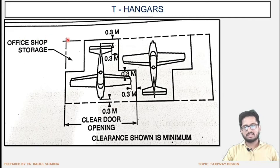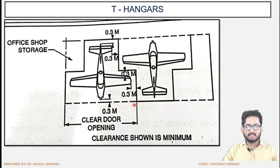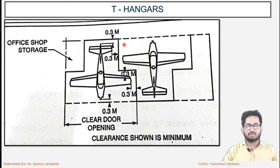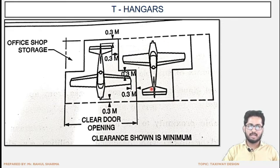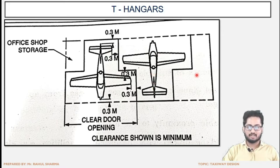The office and shop storage space is kept for handling equipment and various rooms. Clear door openings are provided in hangars through shuttered doors. This is the door opening for a specific area or space of the hangar, and shuttered doors are provided. So the T-hangar is specifically for handling small aircraft, where the full aircraft is brought inside during repair and maintenance work.